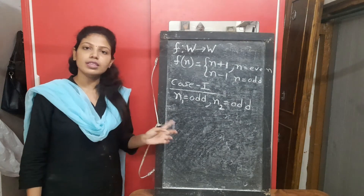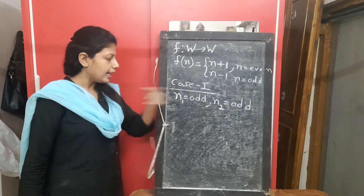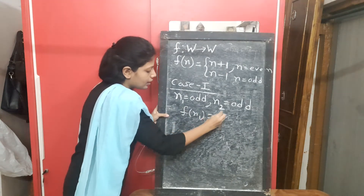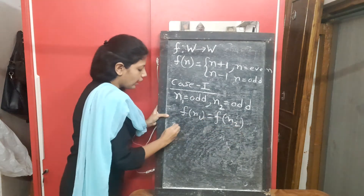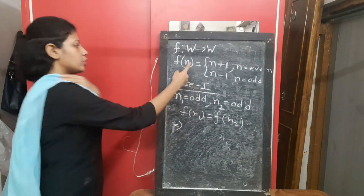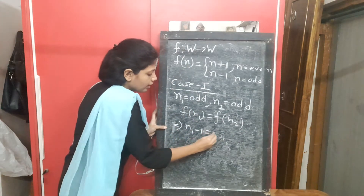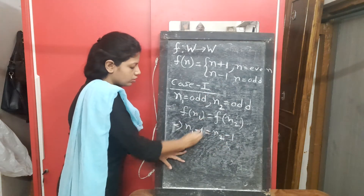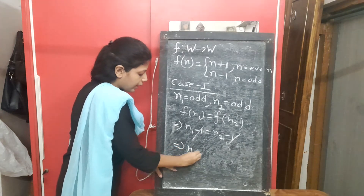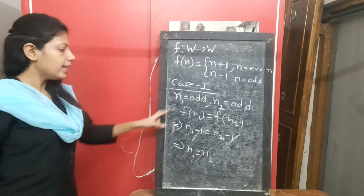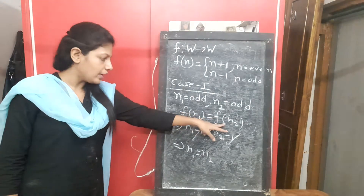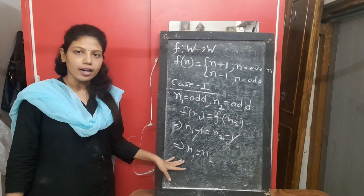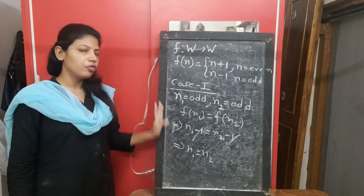Case 1: both numbers are odd. Let n1 and n2 both be odd. Starting from f(n1) = f(n2): since n is odd, f(n1) = n1 - 1 and f(n2) = n2 - 1. Cancelling on both sides gives n1 = n2. So when both numbers are odd, f is 1-1.